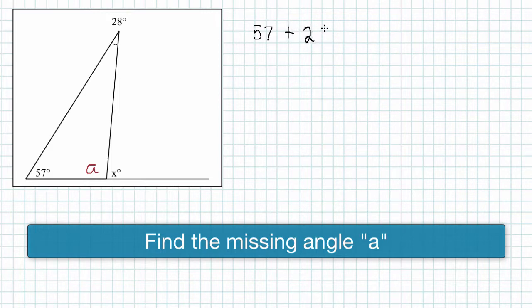These are our three angles. We'll use the variable A for the missing interior angle of the triangle, and this equals 180 degrees.